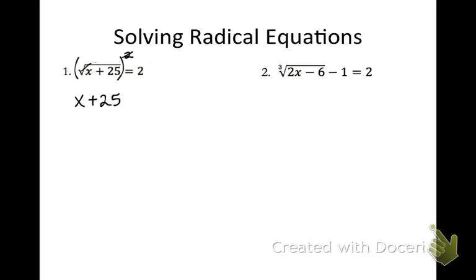If I square the left side, I also have to square the right side, so I get 4 on the right side. Now I have a linear equation to solve, so I will subtract over 25. I get x equals negative 21.